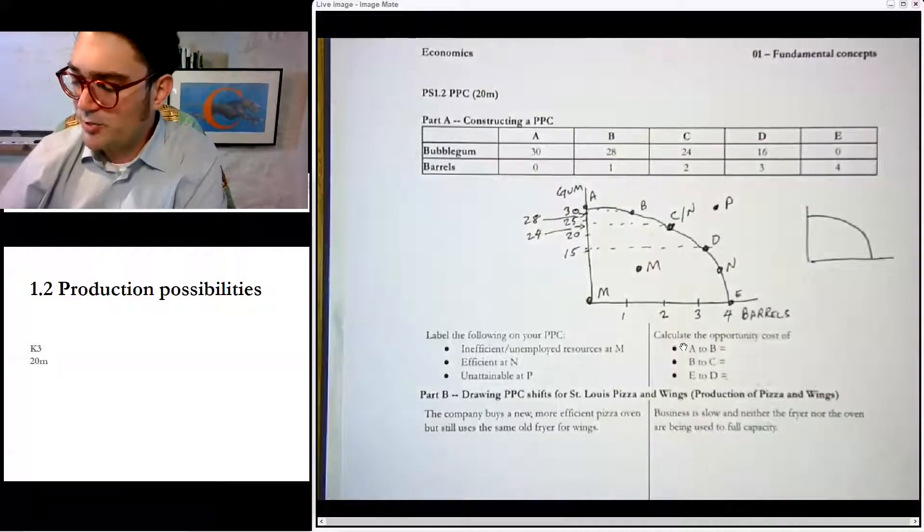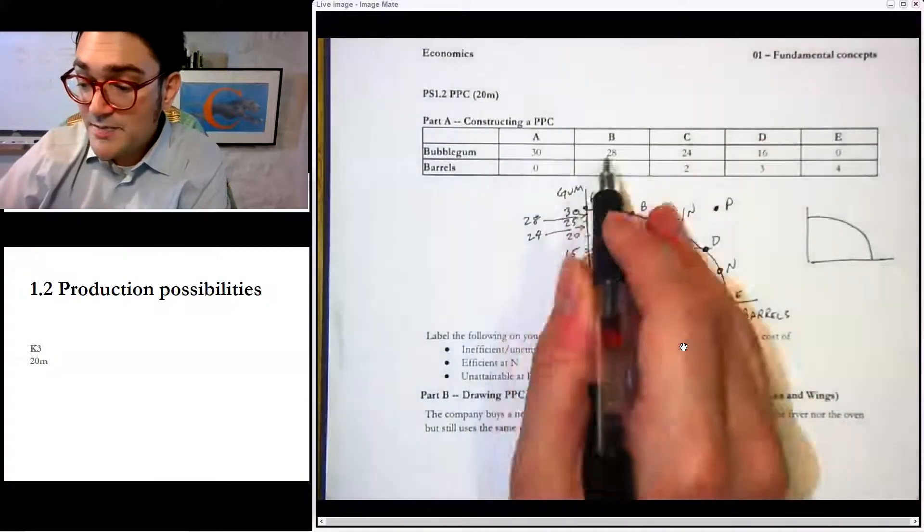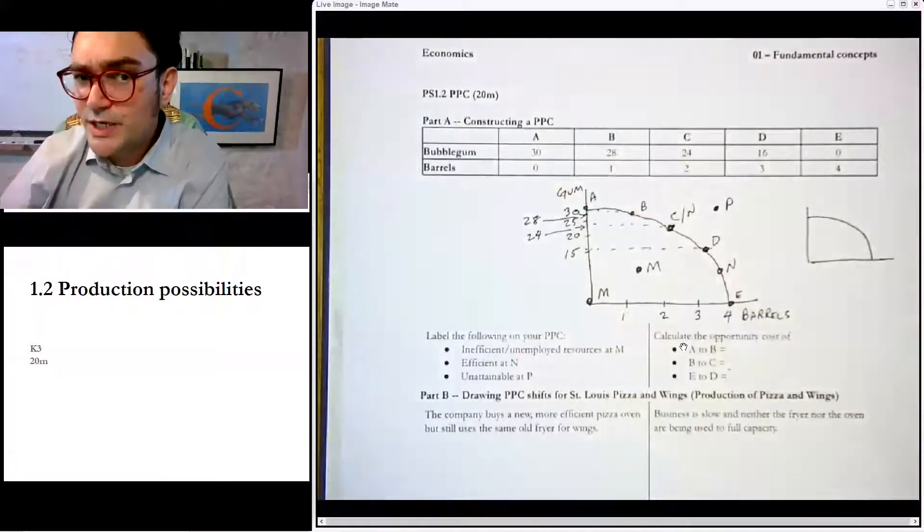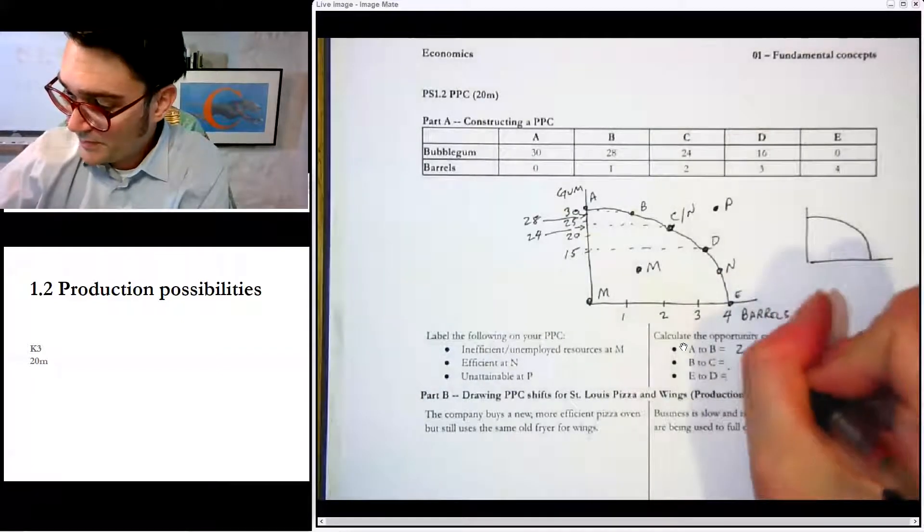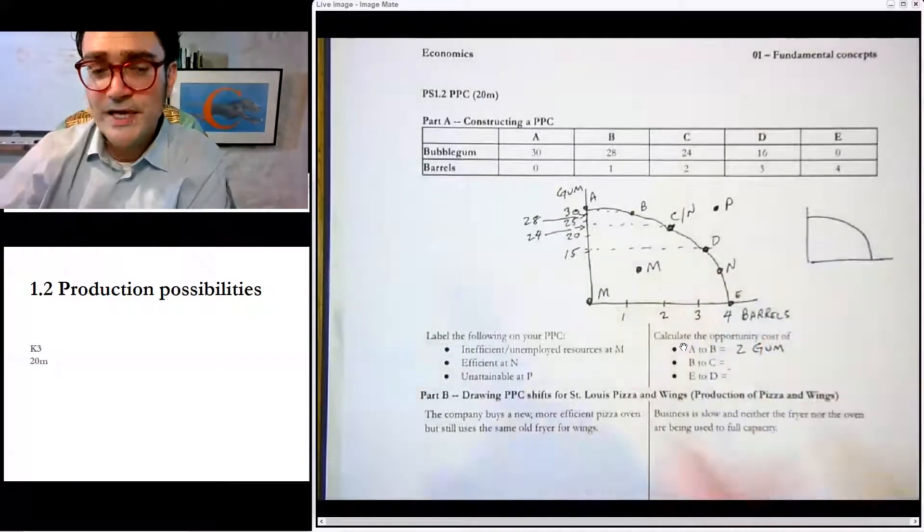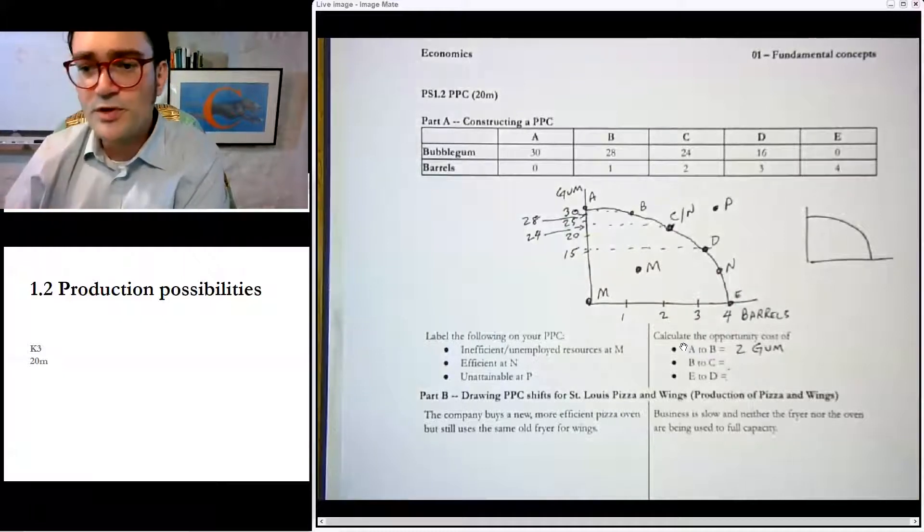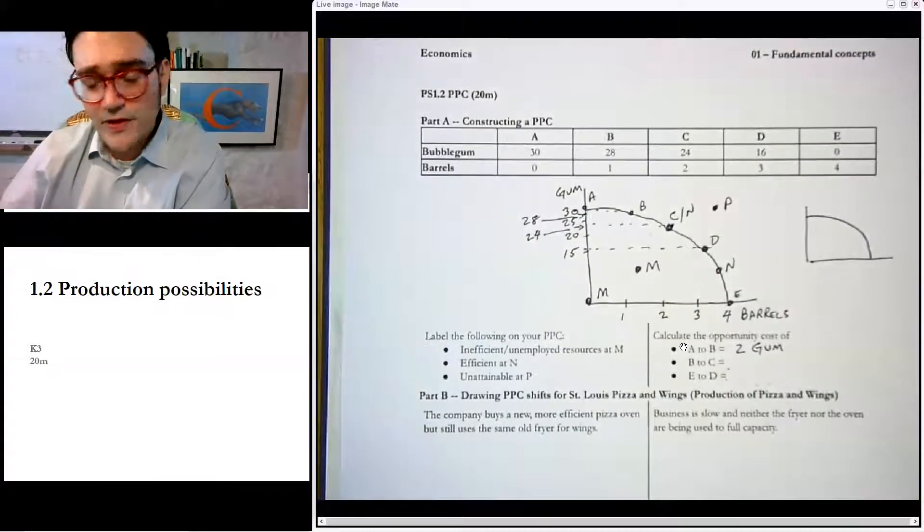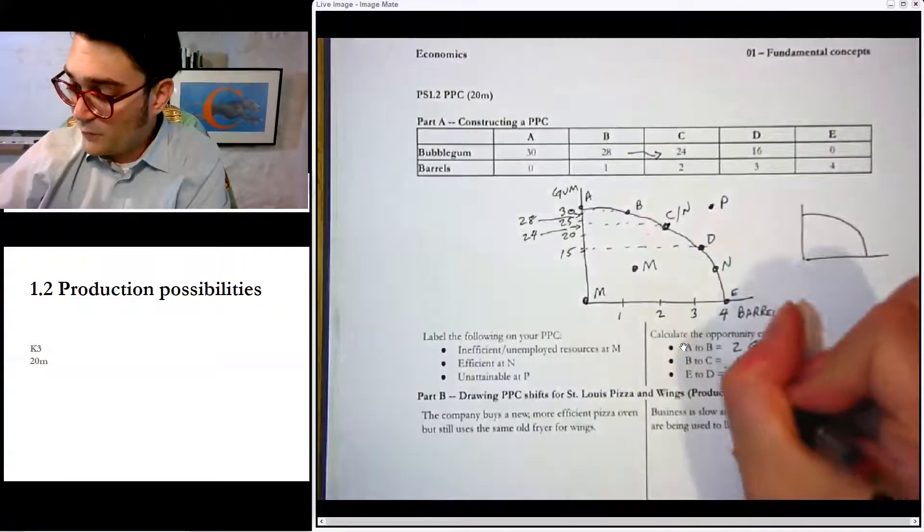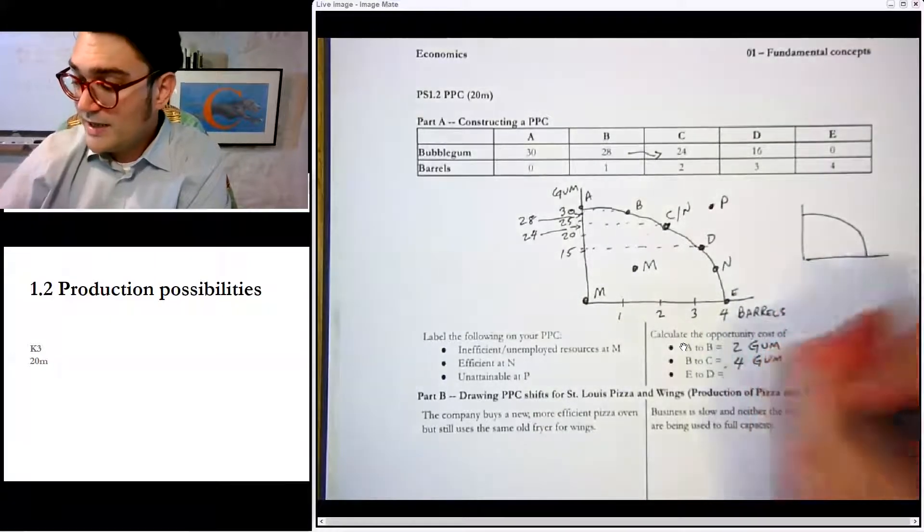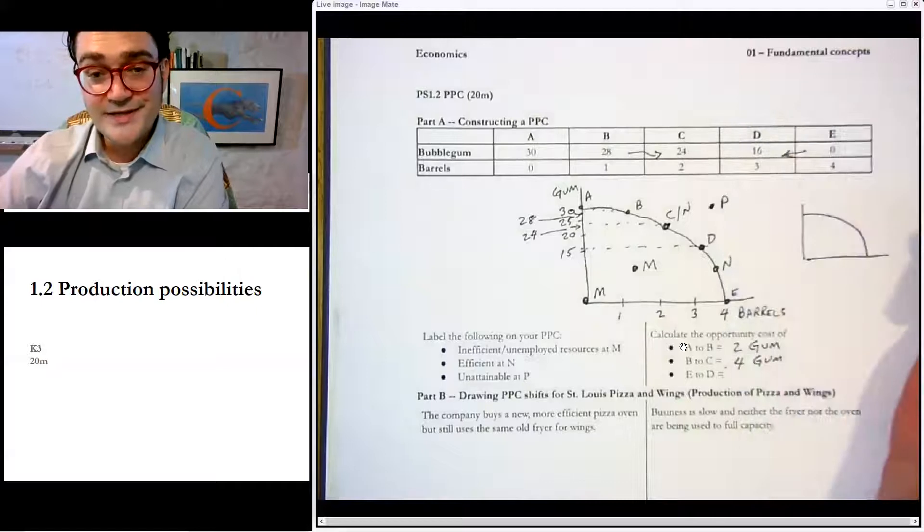Calculate the opportunity cost. Oh boy, I think I may have given these away. A to B, well, when we go from A to B we're gaining a barrel. That's not the opportunity cost. The opportunity cost is the two gum that we gave up, so we should write two gum. You don't put the word gum, you're not actually answering the question. So you need to put that word because it tells you it's expressed in the other thing. From B to C, it's 28 to 24, so we're giving up four gum. And then E to D, we're going to work backwards. Now it's not going to be 16 gum.